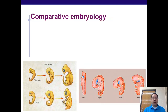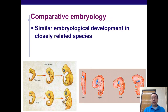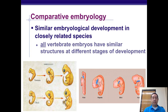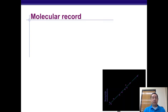Comparative embryology looks at development — specifically how the embryo develops. In different vertebrates you can see very similar structures like gill slits, notochords, and tails across all these vertebrate groups. They look very similar during development, though not very similar as adults.